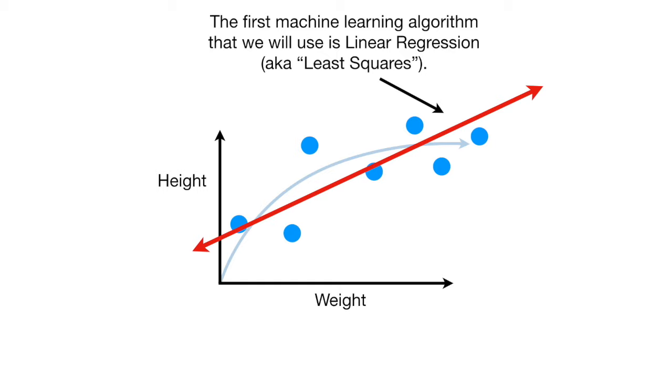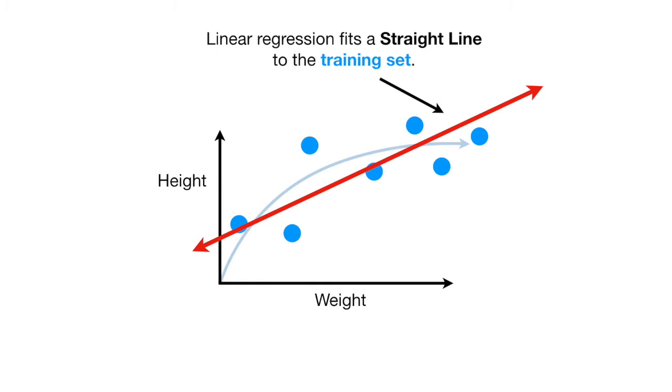The first machine learning algorithm that we will use is linear regression, a.k.a. least squares. Linear regression fits a straight line to the training set.